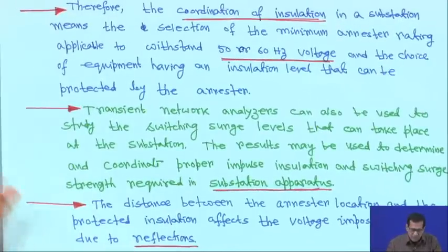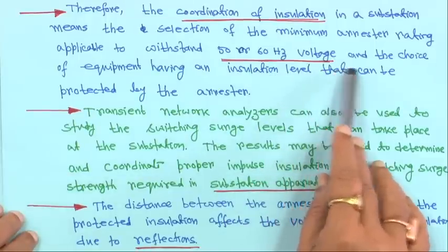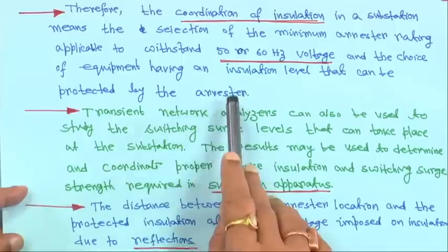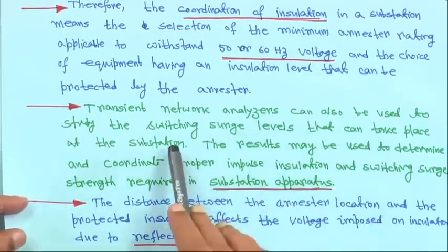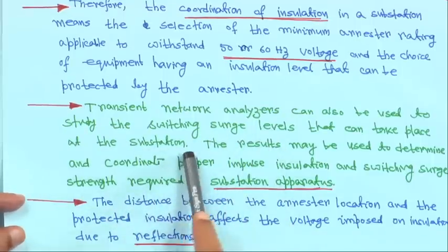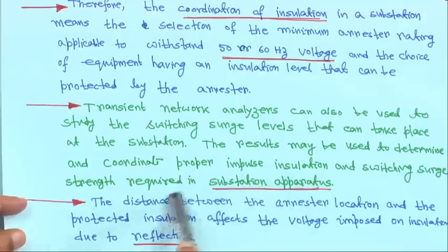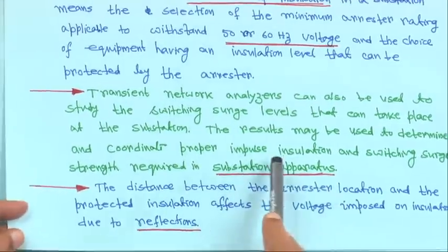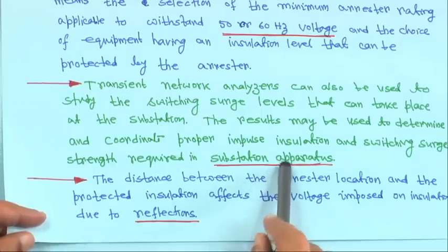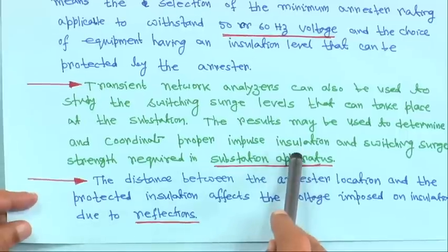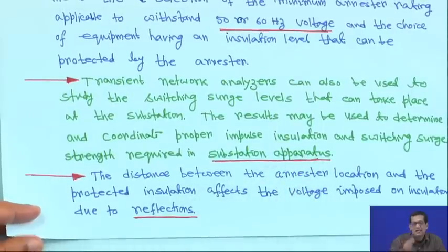The coordination of insulation in a substation means the selection of the minimum arrestor rating applicable to withstand 50 or 60 Hz voltage, and the choice of equipment with an insulation level that can be protected by the arrestor. A transient network analyzer can also be used to study the switching surge levels that can take place at the substation, helping determine proper impulse insulation and switching surge strength.